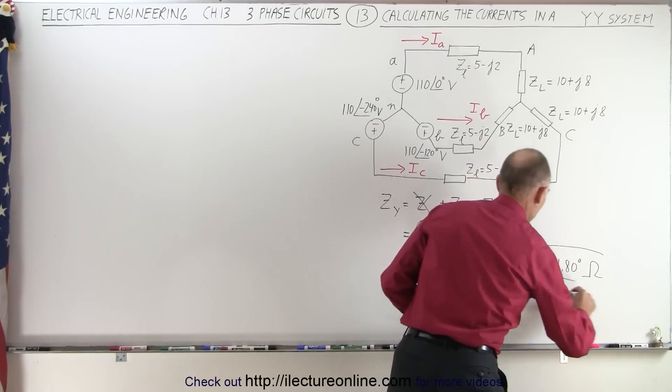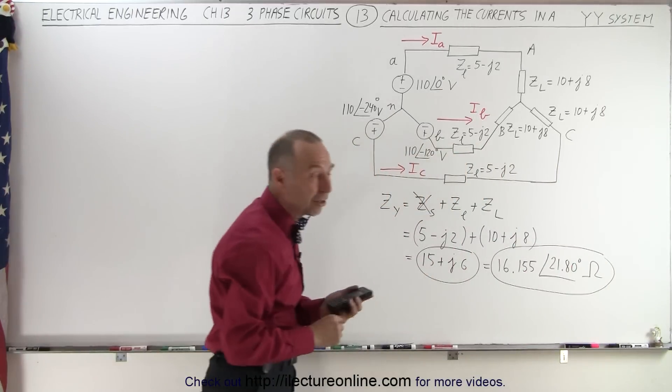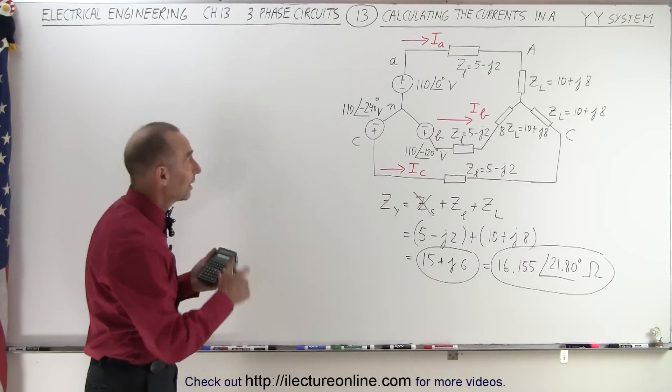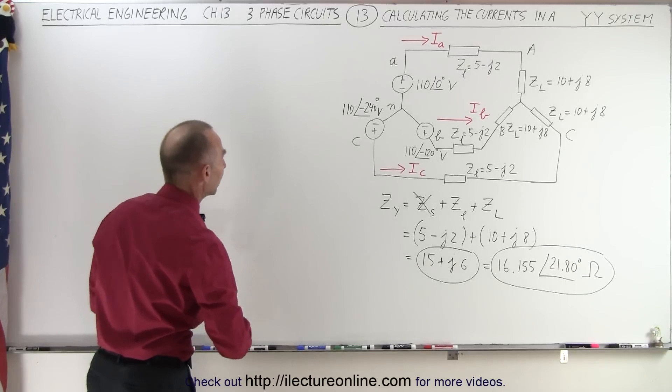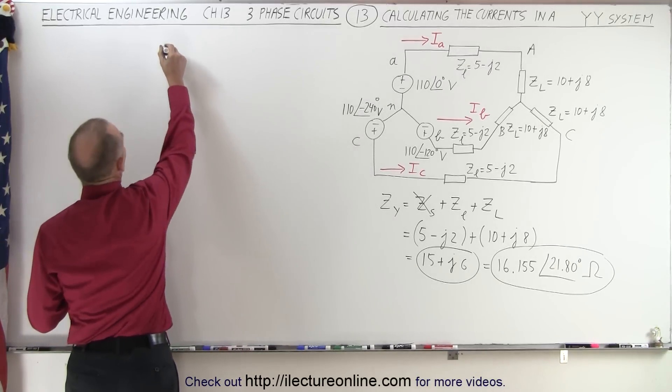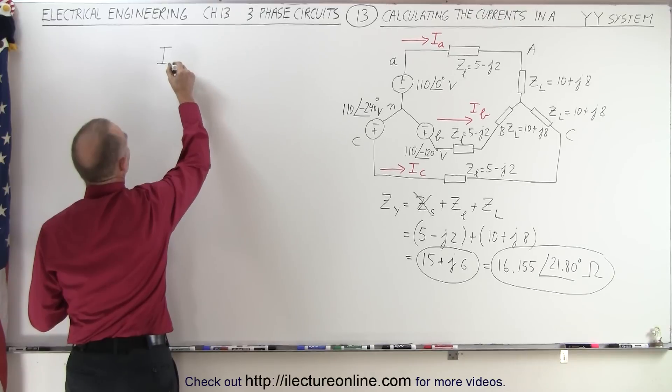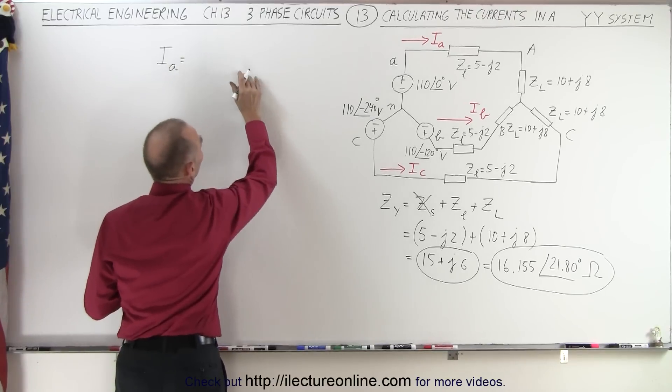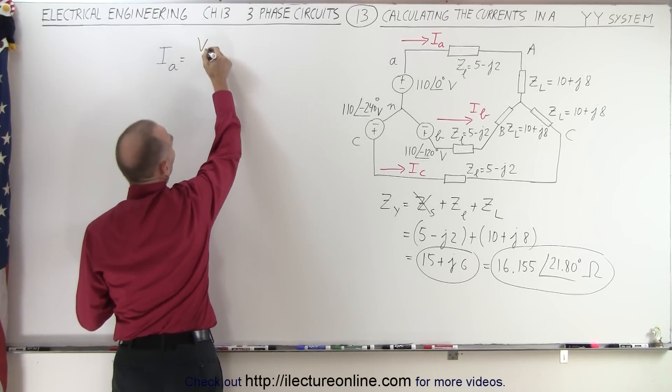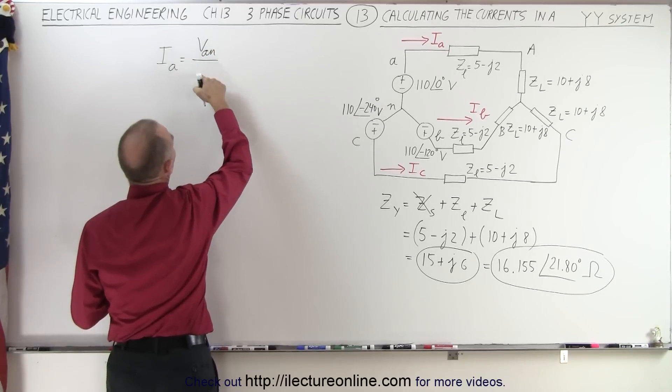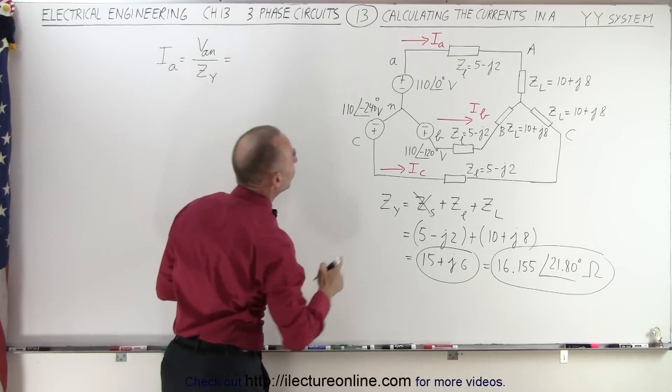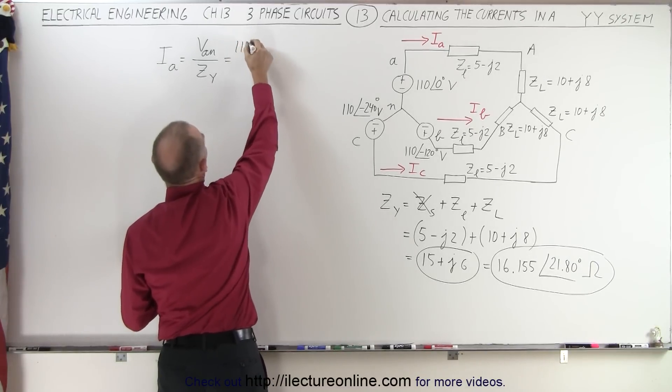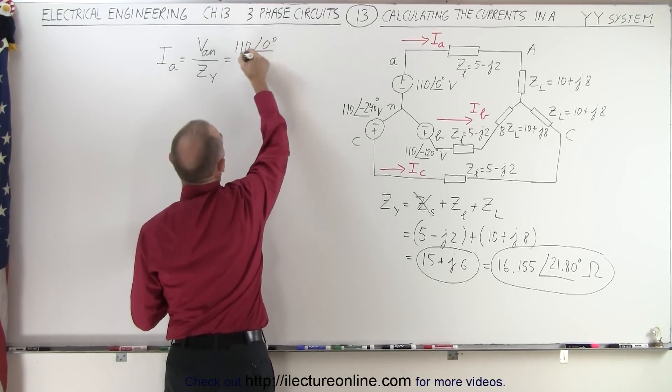This is the load impedance or the total impedance that the source sees. Now we can calculate the three currents because we know that Ia, the current Ia, is going to be equal to the voltage, Va, or Van, I should say, divided by the impedance, Zy impedance, like this. So this is going to be equal to 110 volts at a phase angle of 0 degrees, divided